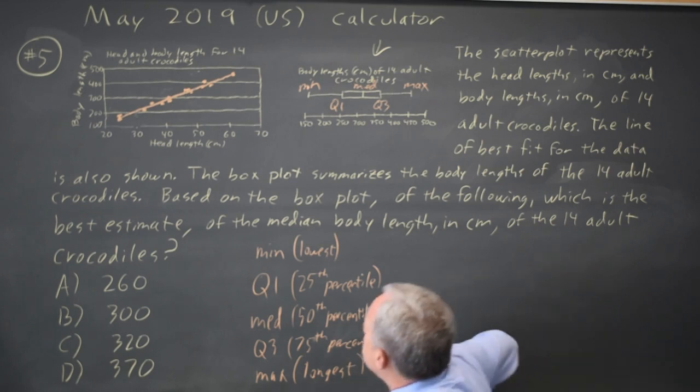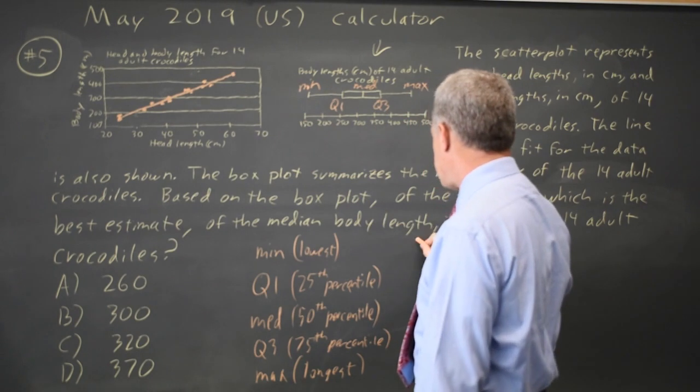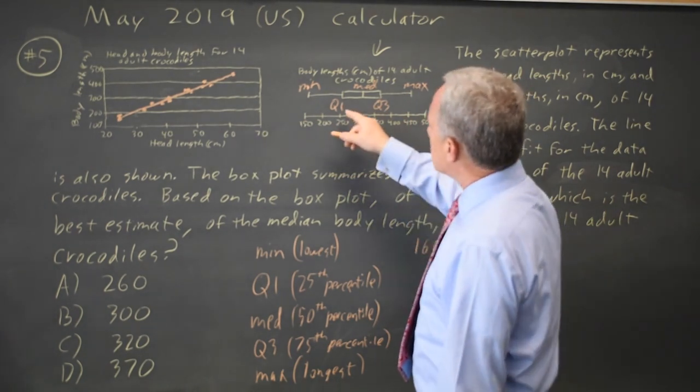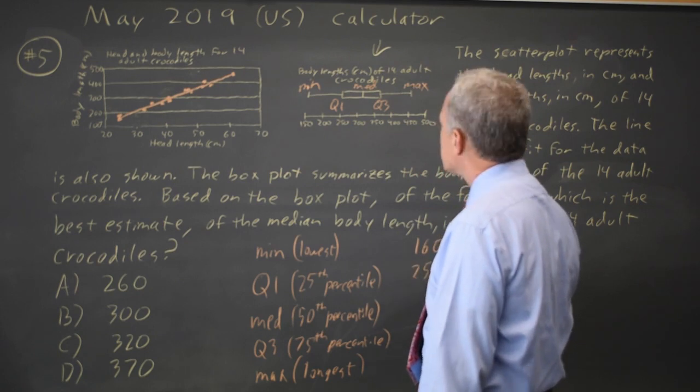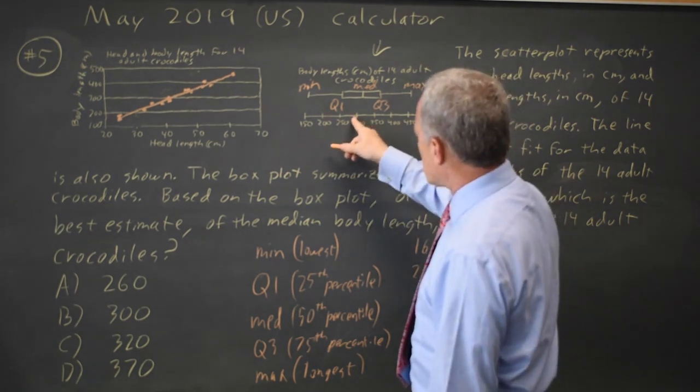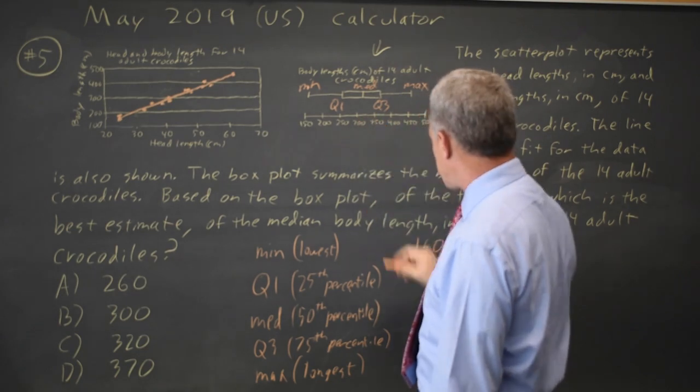I would estimate from this chart that the minimum is a little more than 150, maybe 160. Quartile one is just over 250, I'll call it 255. Median is more than 300, less than 350, a little closer to 300, so I'll call it 320.